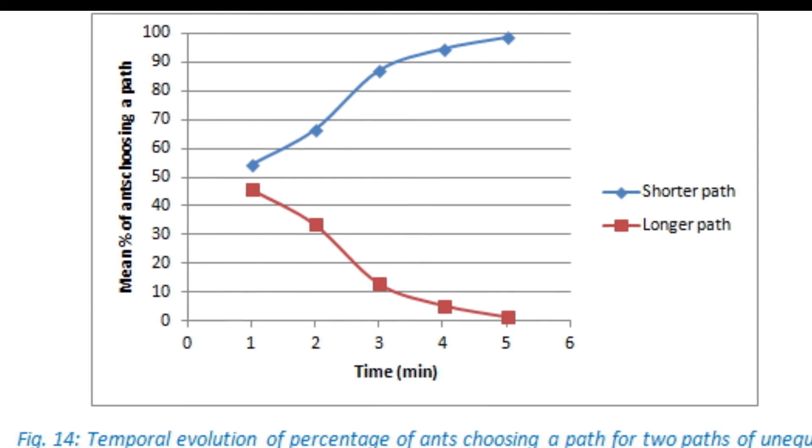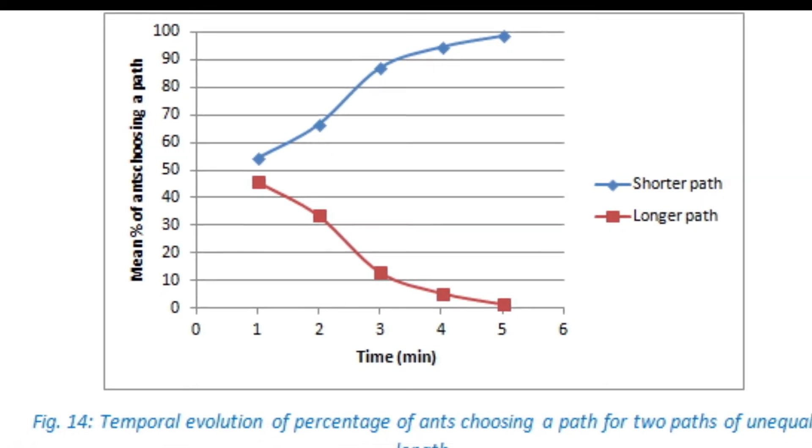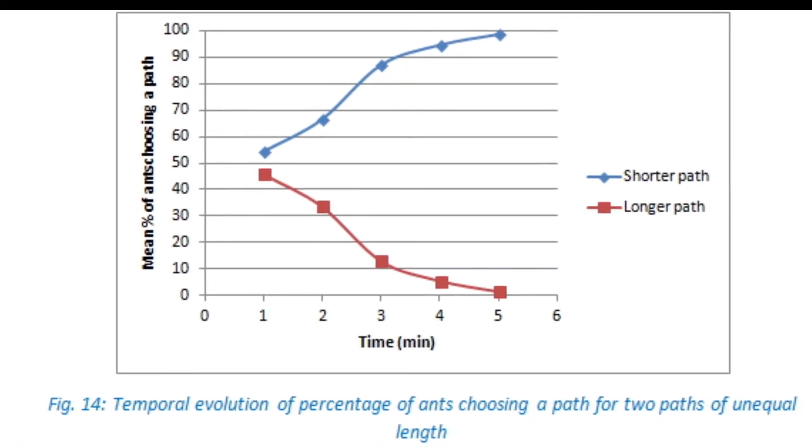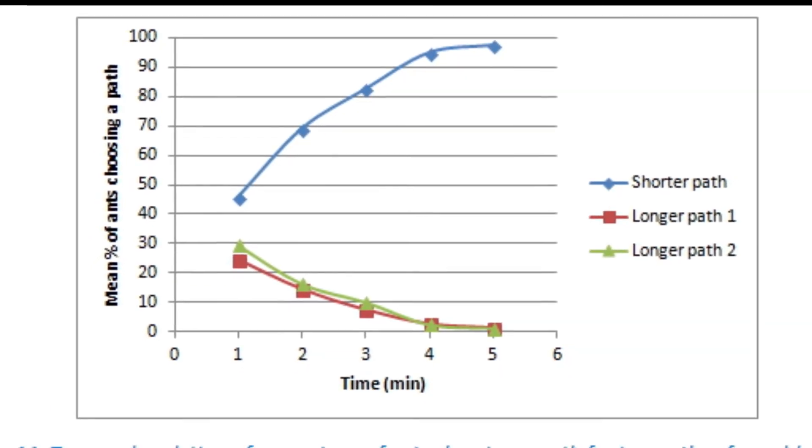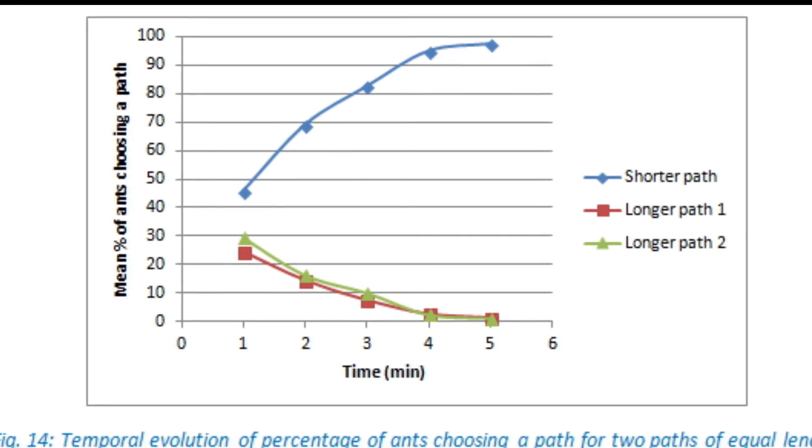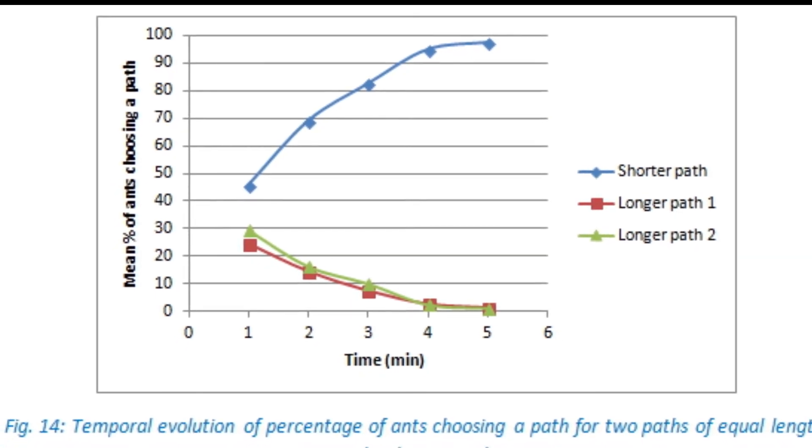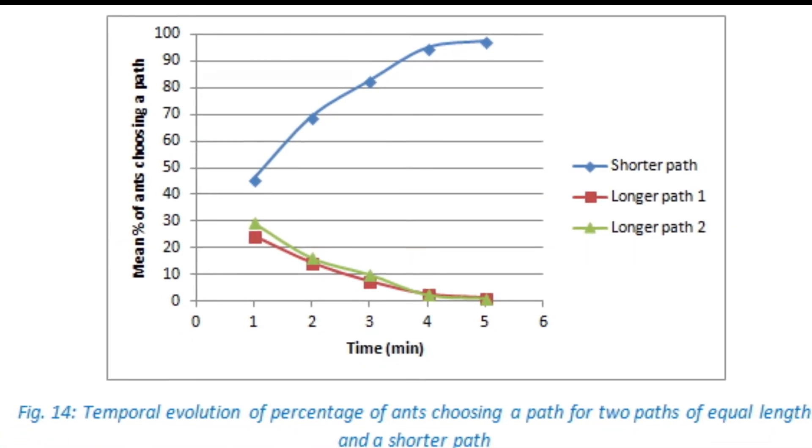Graphs were also plotted to visualize the temporal evolution of percentage of ants choosing a path over five minutes. You can see that for the shorter path, the percentage of ants increases, and for the longer paths, the percentage of ants decreases with time.